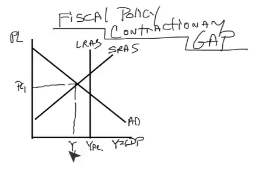And the reason for that is, again, we are in a recession, which means the current level of GDP is insufficient to create full employment. So as a result, Y1 is to the left of full employment.